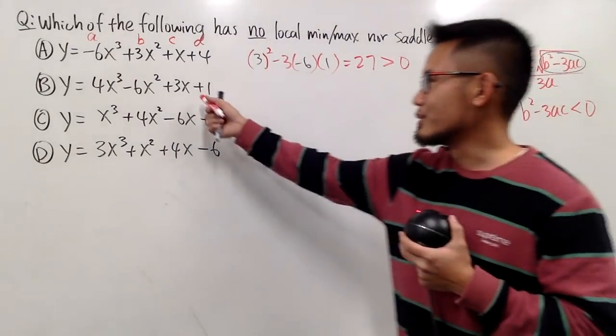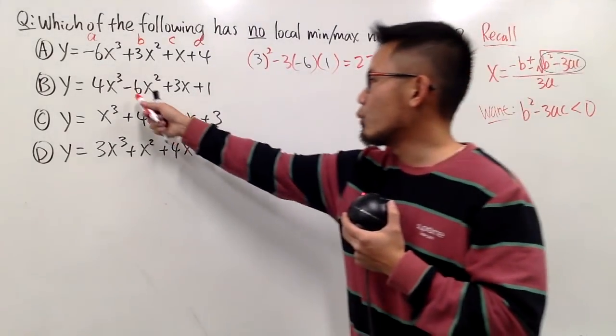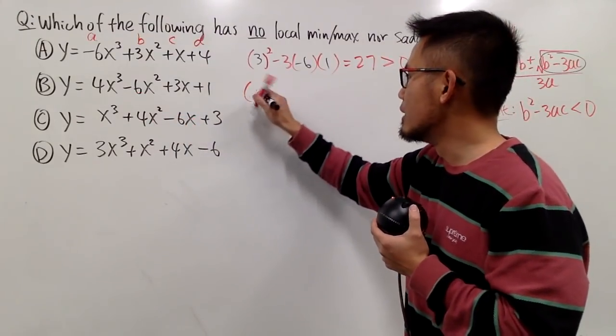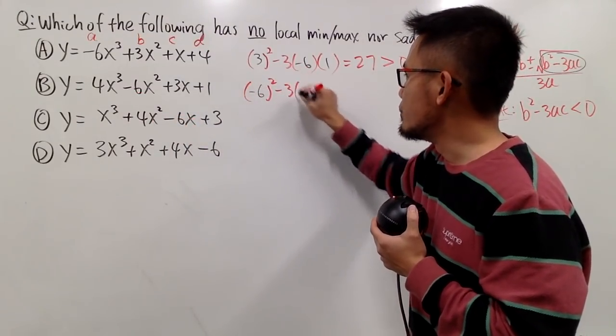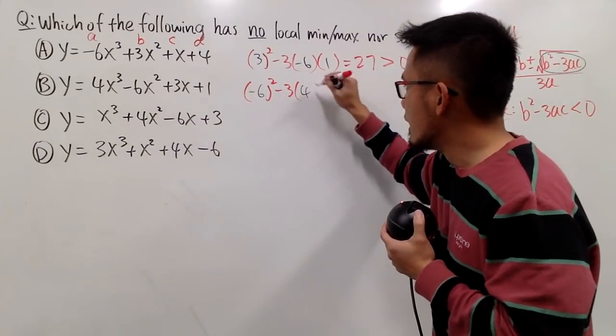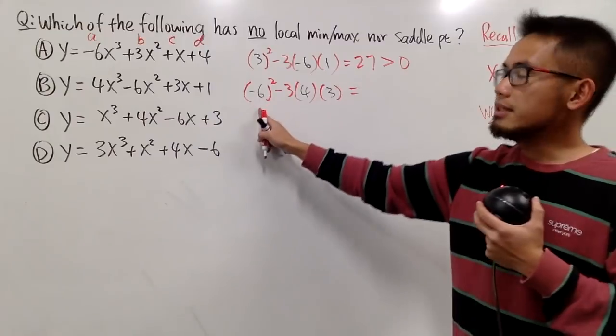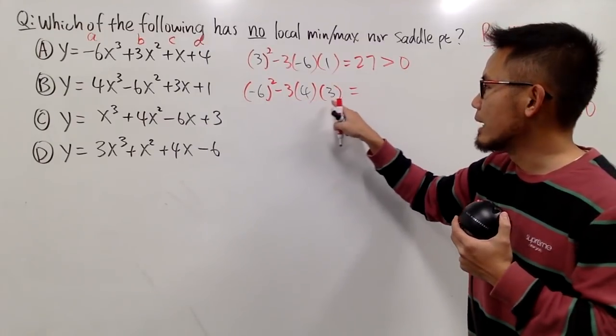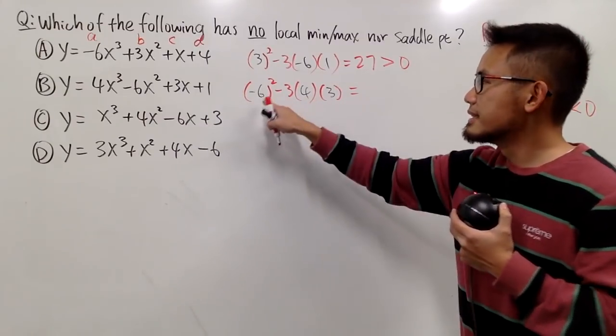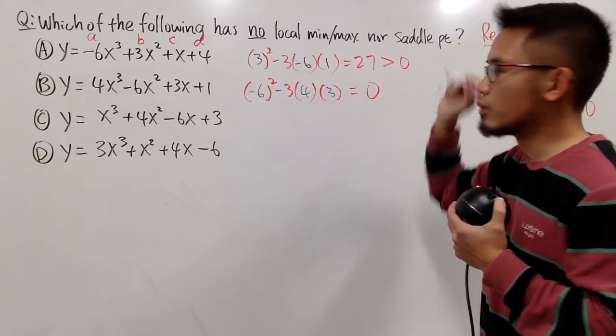Let's do the second one. I will have to use this as the b value now. So we have negative 6 squared minus 3 times a which is 4, times c which is 3. This is 36. 3 times 4 times 3 is also 36. 36 minus 36, we get 0.